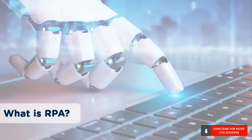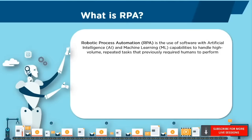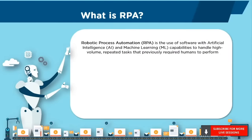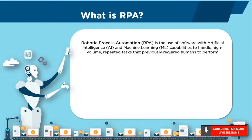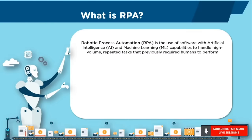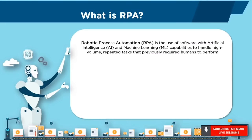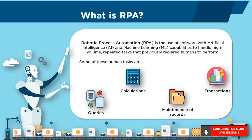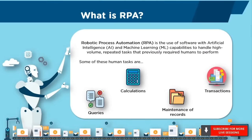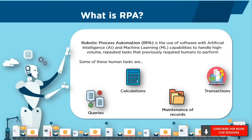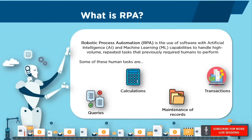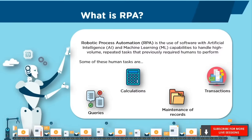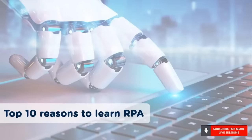Robotic process automation is the use of software with artificial intelligence and machine learning capabilities to handle high-volume repeated tasks that previously required humans. Some of these tasks include addressing queries, making calculations, maintaining records, or even making transactions. So why is RPA gaining popularity so rapidly, and why do companies and techies have RPA perspectives? Here are the 10 reasons why one should learn RPA.